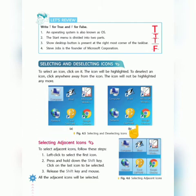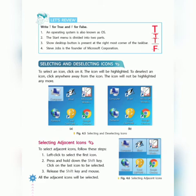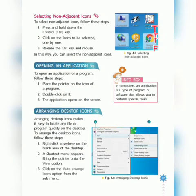Next is selecting adjacent icons — adjacent means icons which are closer to each other. To select adjacent icons: step 1, left-click to select the first icon; step 2, press and hold the Shift key and click on the last icon to be selected; step 3, release the Shift key and mouse — all adjacent icons will be selected, as shown in figure 4.6.